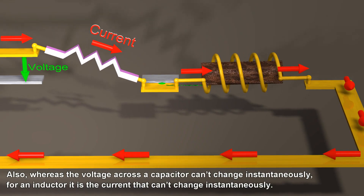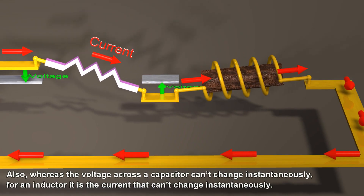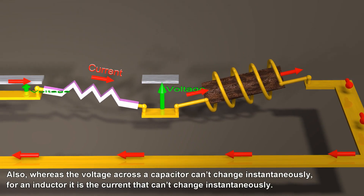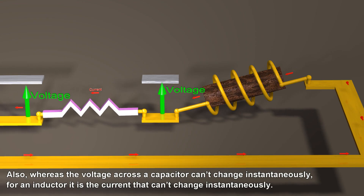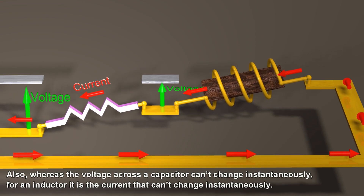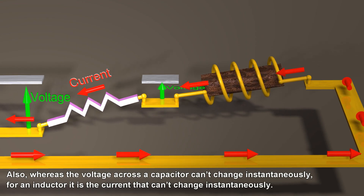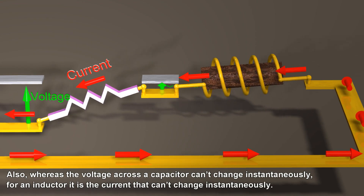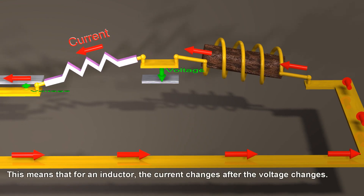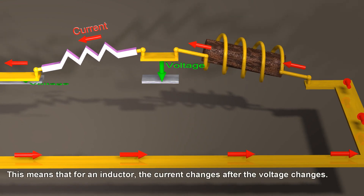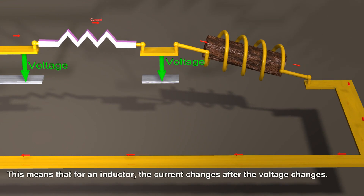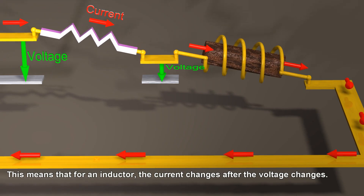Also, whereas the voltage across a capacitor can't change instantaneously, for an inductor it is the current that can't change instantaneously. This means that for an inductor, the current changes after the voltage changes.